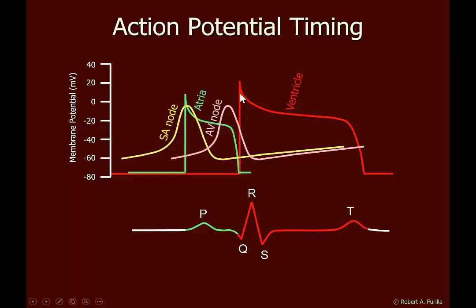One thing to remember is this is one myocyte action potential. There are many, many action potentials occurring in rapid succession, producing the Q — which is usually the septal depolarization — the R wave in which most of our ventricles are contracting, and then toward the end we see the S wave. By the end of the S wave all cardiac myocytes are contracting, and at the beginning of the T wave we begin to see ventricular relaxation until the end of the T wave, back to rest.